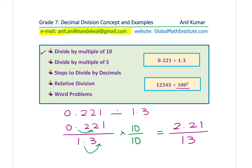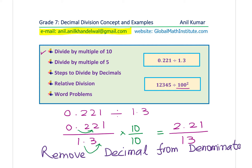Now it becomes simpler — it is like normal division. The idea here is that in most cases you have to remove the decimal number from the denominator. The denominator is the bottom part of a fraction, and the top part is called the numerator. Let's take some examples to understand the whole process.